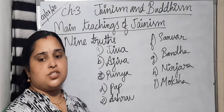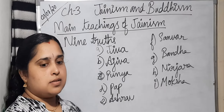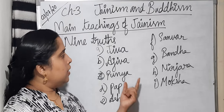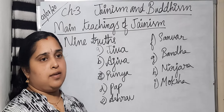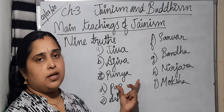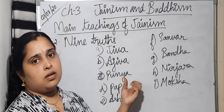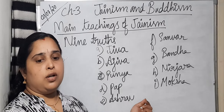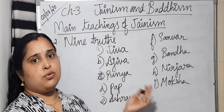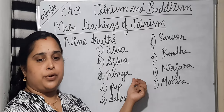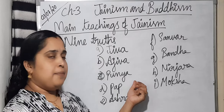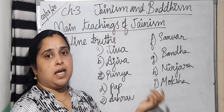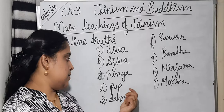The first truth is Jeeva, which means living things — that is, people. Ajeeva means non-living things, such as the desire for a house or other material things. Punya refers to all the good deeds we are doing. Paap is sin — all sins such as murder, killing, or thinking bad of others.